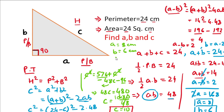So the final answer is: a equals 8 centimeters, b equals 6 centimeters, and c equals 10 centimeters. Note that the values of a and b could be interchanged as either perpendicular or base. Hope you enjoyed the video — if you liked it, please subscribe to our channel. Thank you for watching.